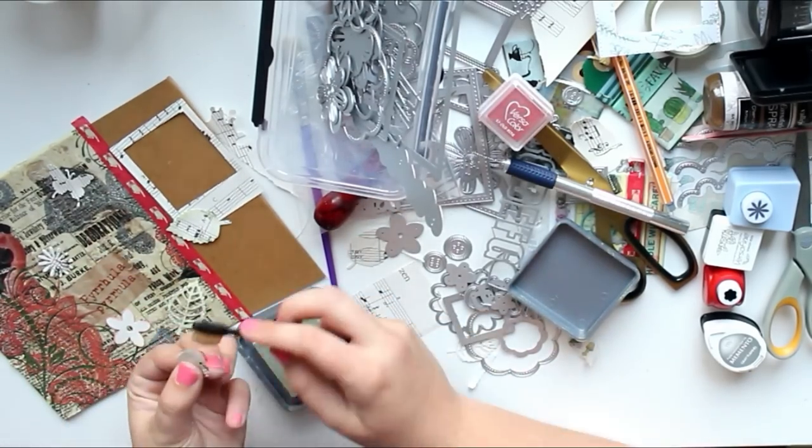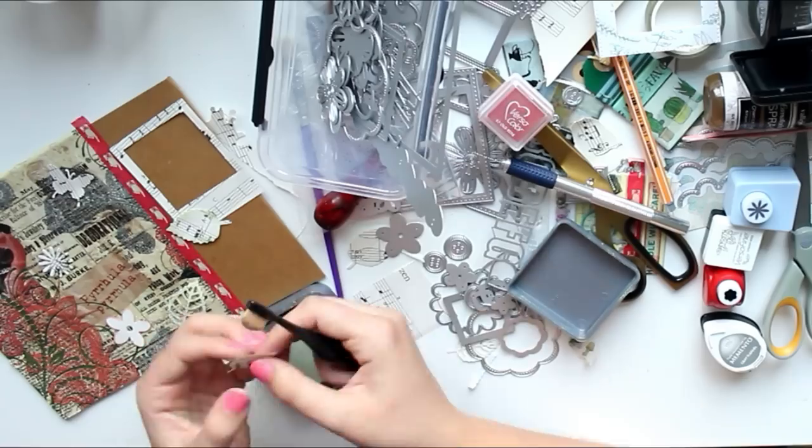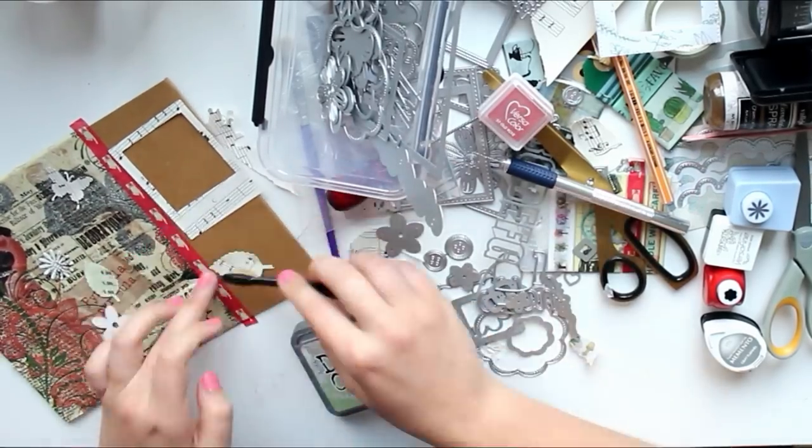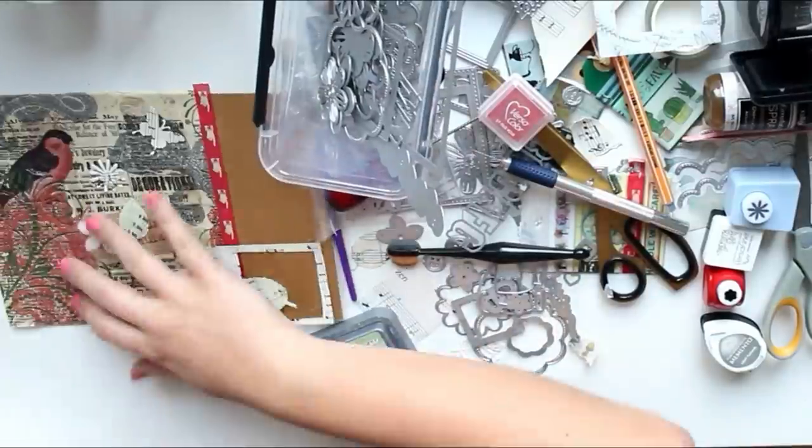By the way, the washi tape sample that I used has the finger on it, like the hand with the finger on it, the red one. I got that from Sahara a while ago and I thought it matched really well, and it also covers up the edge of the napkin which is quite nice.